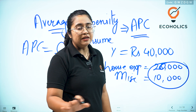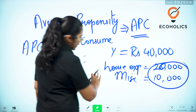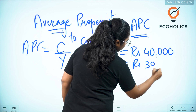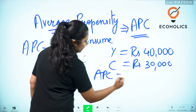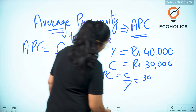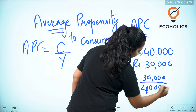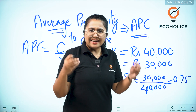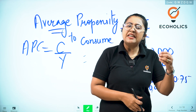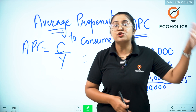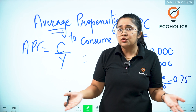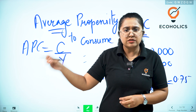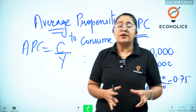So the total amount you have spent in a month is 30,000 rupees on different goods and services. C equals 30,000. APC will be C upon Y, which means 30,000 upon 40,000, which equals 0.75 or 75%. Technically, you can say that out of your monthly income, 75% is used for consumption of goods and services. That is your average propensity to consume — 75% of your total income is utilized in consuming different goods and services.